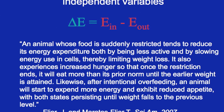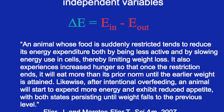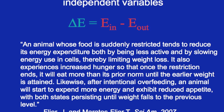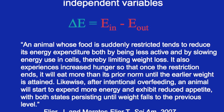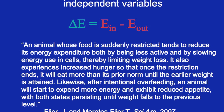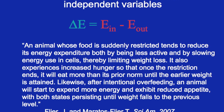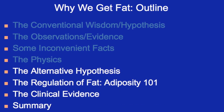In Scientific American in 2007, Jeff Flyer, who's now dean of Harvard Medical School, and his wife Terry Maratos-Flyer, both obesity experts, put it this way about animals: 'An animal whose food is suddenly restricted tends to reduce its energy expenditure, both by being less active and by slowing energy use in cells, thereby limiting weight loss.' It also experiences increased hunger so that once the restriction ends, it will eat more than its prior norm until the earlier weight is attained. And likewise, after intentional overfeeding, an animal will start to expend more energy and exhibit reduced appetite. So E-in and E-out are not independent variables.